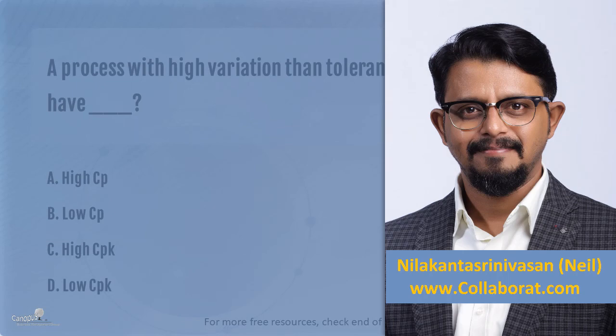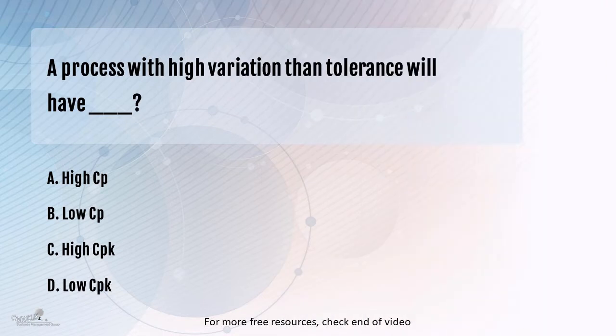We'll move on to a new question. This question relates to process capability. The question goes like this: the process with high variation than the tolerance will have — options are: high CP, low CP, high CPK, and the last option is low CPK.